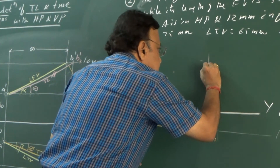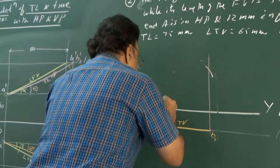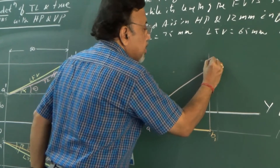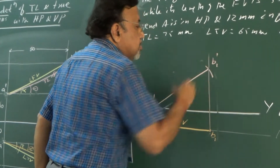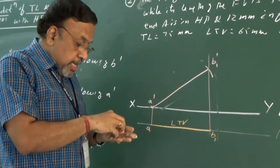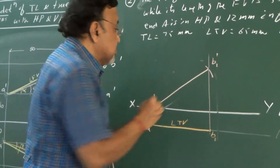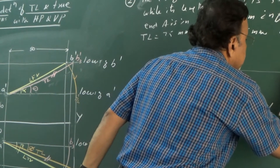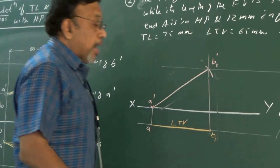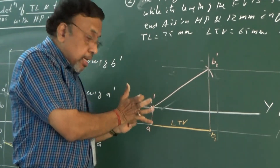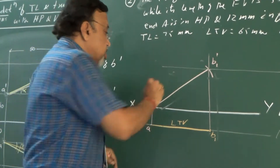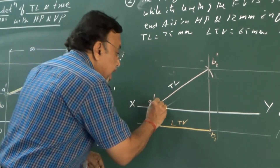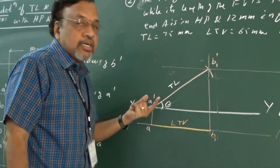That gives me B1 dash somewhere here. So this is B1 and this becomes B1 dash. Now we are going to fix the locus of B dash. In this step, we are able to determine the true length. Since this is the true length, what about this angle? This angle is with reference to HP — that is theta.